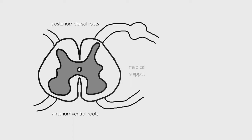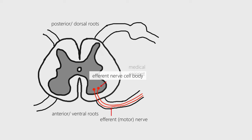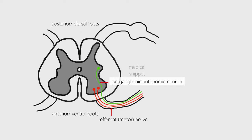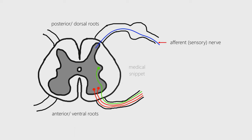The ventral root contains efferent motor nerve fibers, which carry stimuli from the spinal cord to the periphery. The nerve cell bodies of the ventral roots are located in the grey matter of the spinal cord. The ventral roots also contain preganglionic autonomic neurons. The dorsal root contains afferent sensory nerve fibers, which carry sensory information from the periphery to the spinal cord. The cell bodies of the dorsal root are not present in the spinal cord, but they are located in a structure called the dorsal root ganglion.